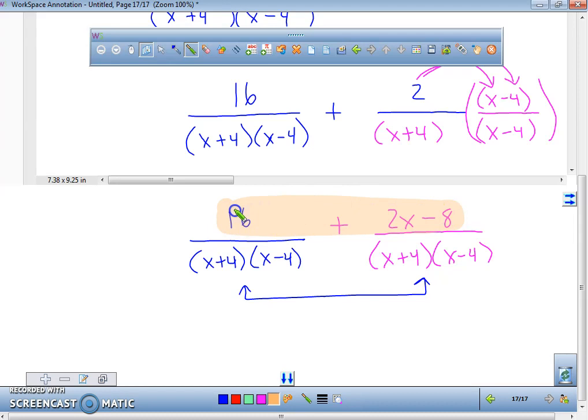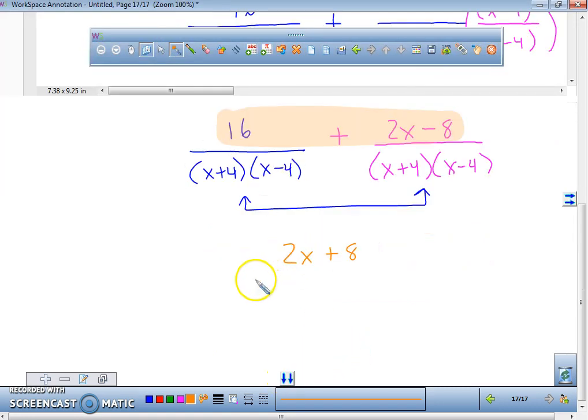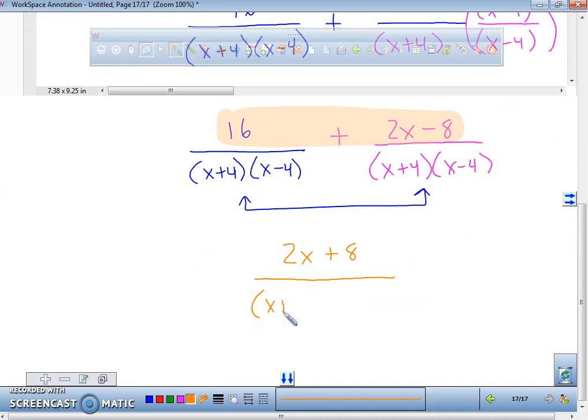What are the only two numbers that we can combine between 16 and 2X and negative 8? Negative 8 and 16. What's 16 minus 8? 8. Right now, I'm going to write 2X plus 8 over our denominator of X plus 4 and X minus 4.